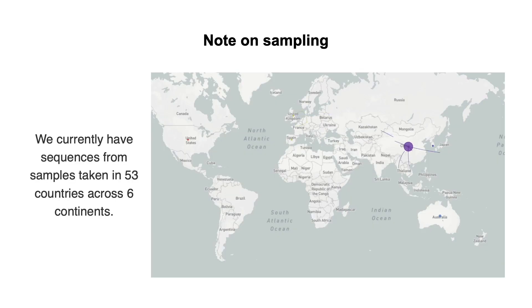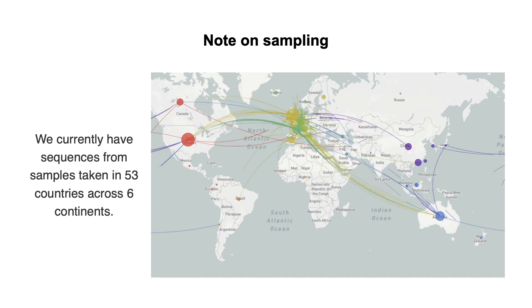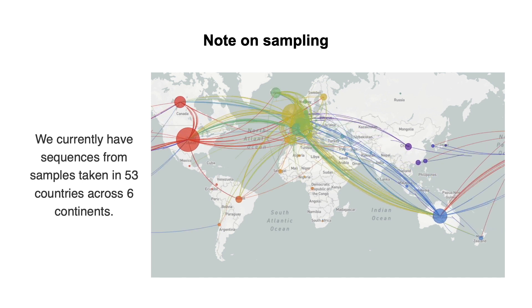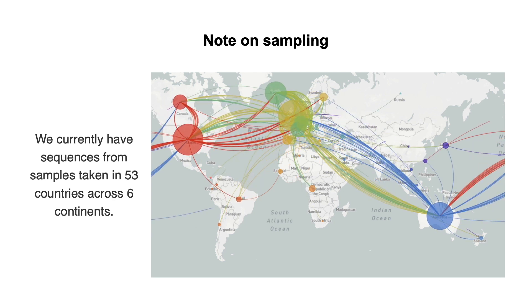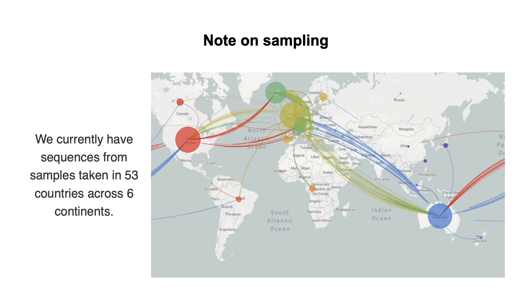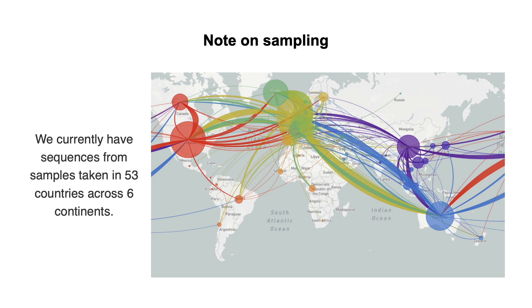We currently have sequences from samples taken in 53 countries across 6 continents. While this data enables us to infer many useful characteristics of the outbreak and track its spread in real-time, it's important to emphasize that our conclusions are limited by the available data. For example, the map shows very few sequences from the Global South — not because COVID-19 isn't circulating there, but because we just don't have much data available from these areas. Remember that the size of each circle on the map indicates how much data is currently available from that area, rather than the true size of the outbreak.